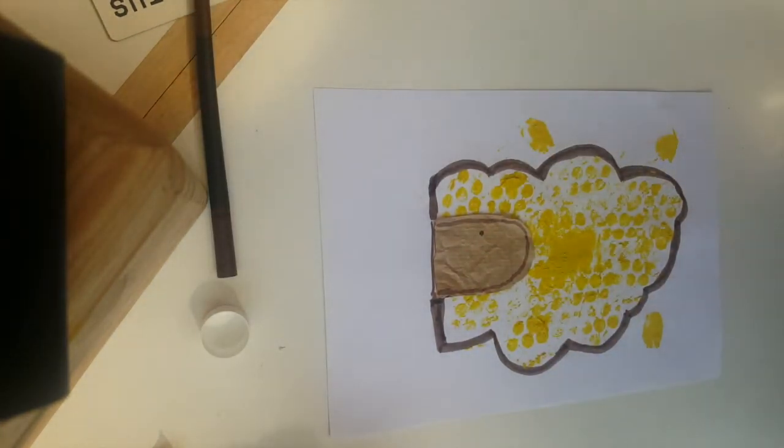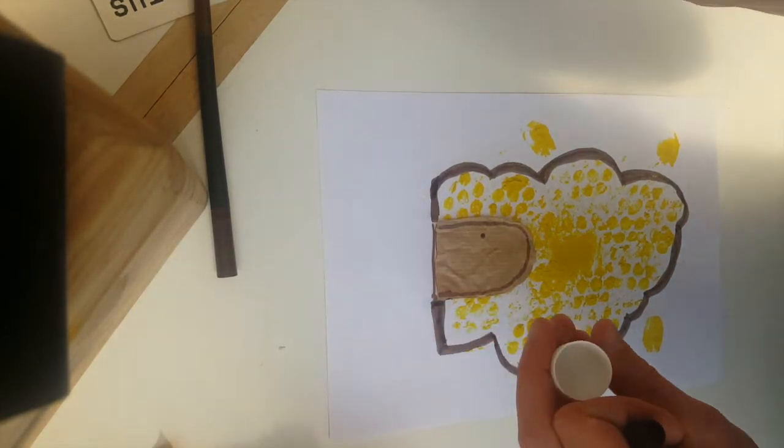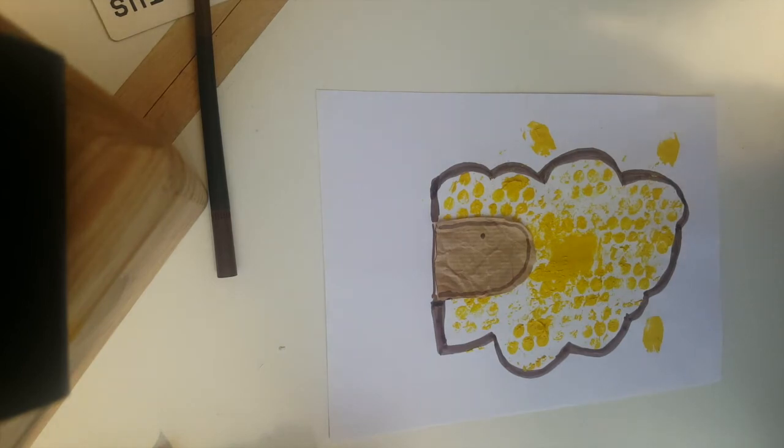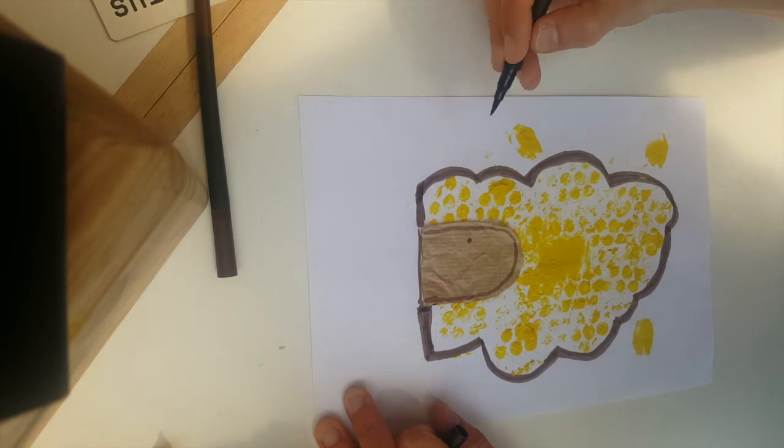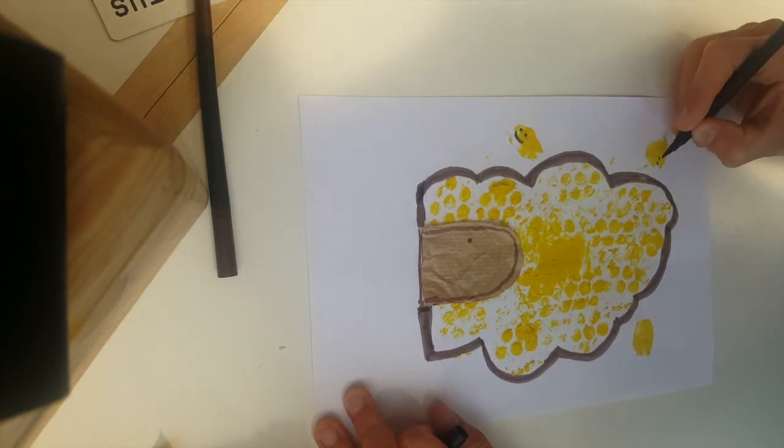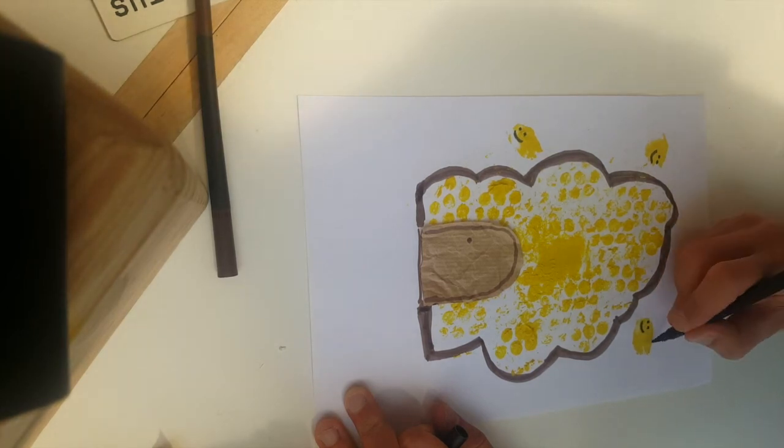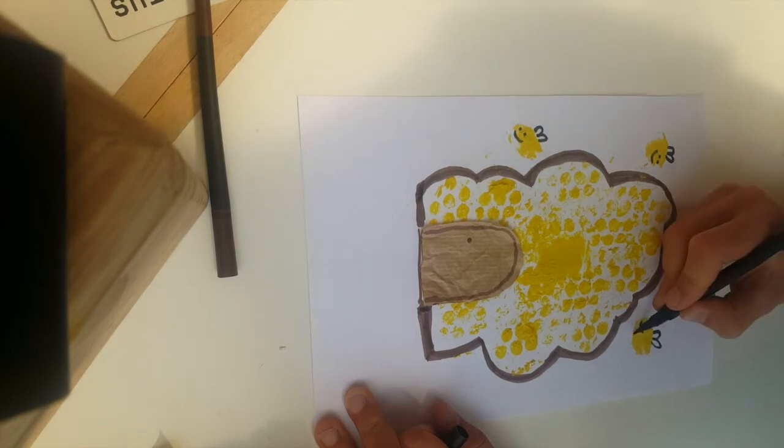And now with our black pen, we're going to finish this picture off, and as I do this, you're going to realize what it is I've been making. Maybe you've guessed already. With our black pen, I will show you just in case you still haven't worked it out. So we're going to do some happy little faces, some little wings, and then some black stripes.